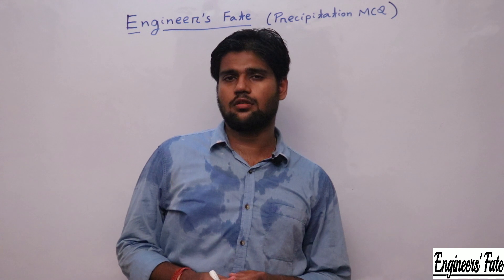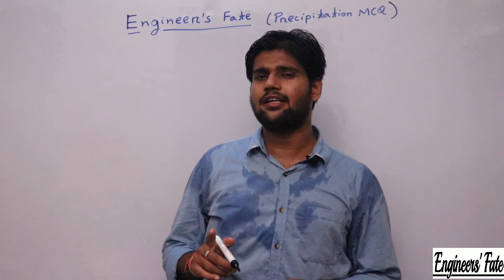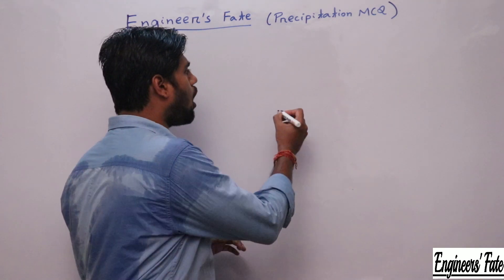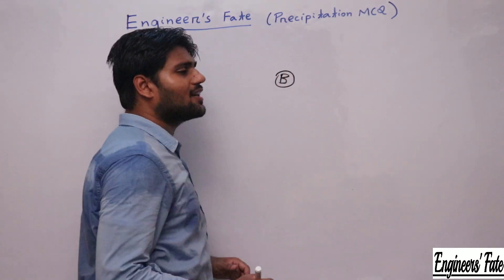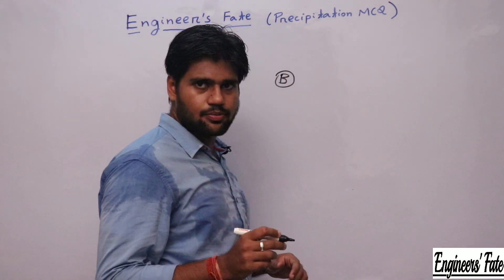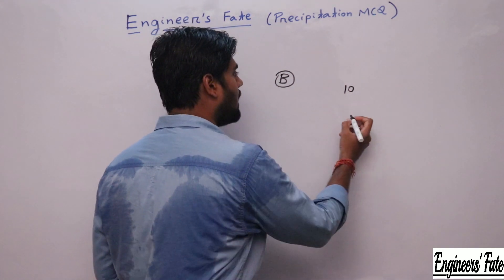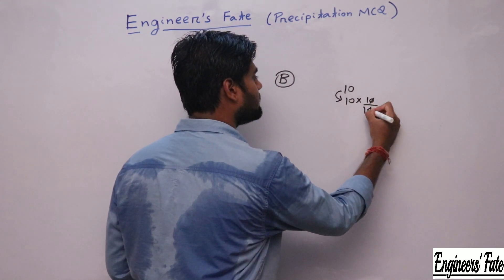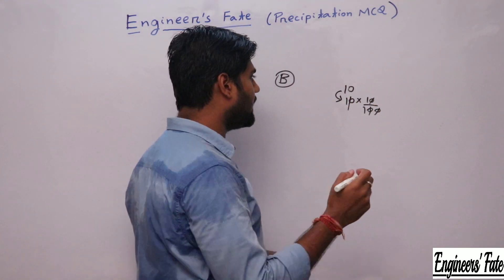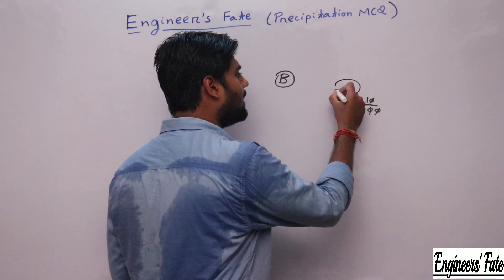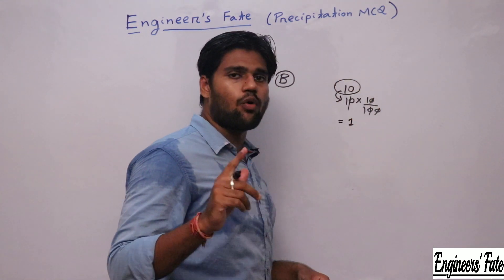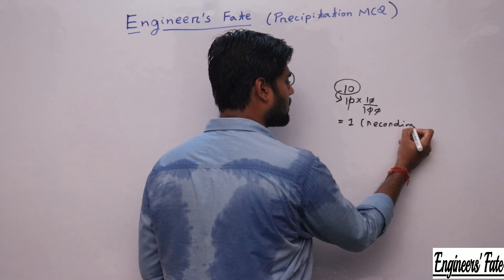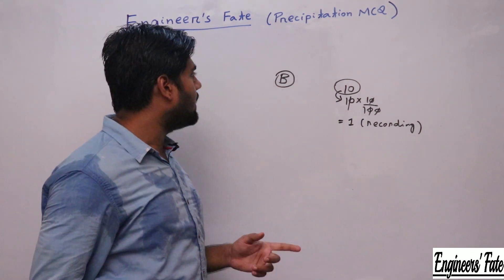No matter how many rain gauge stations are in a catchment, at least 10% of the rain gauges will be recording type. So the option is B. This means if a catchment has 10 rain gauge stations, at least one must be a recording type rain gauge station.